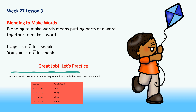Now let's practice. Repeat after me: S-P-I-N. What is the word? Spin. Repeat after me: S-N-A-G. What is the word? Snag.